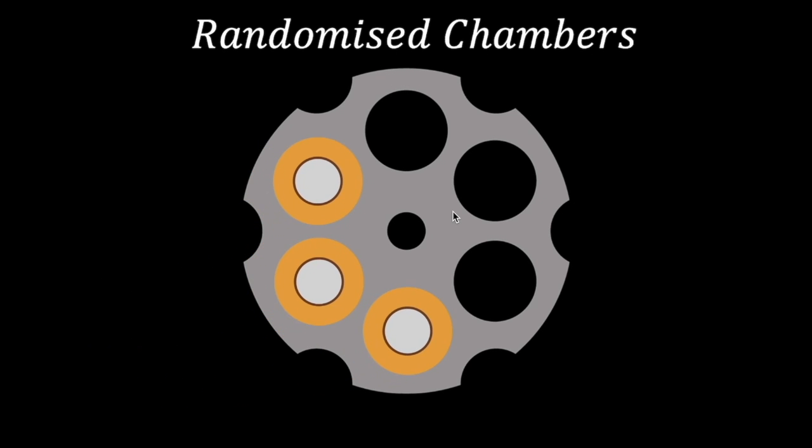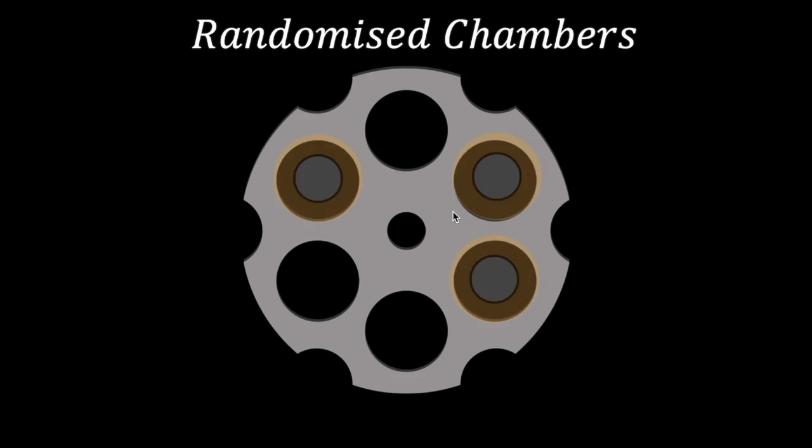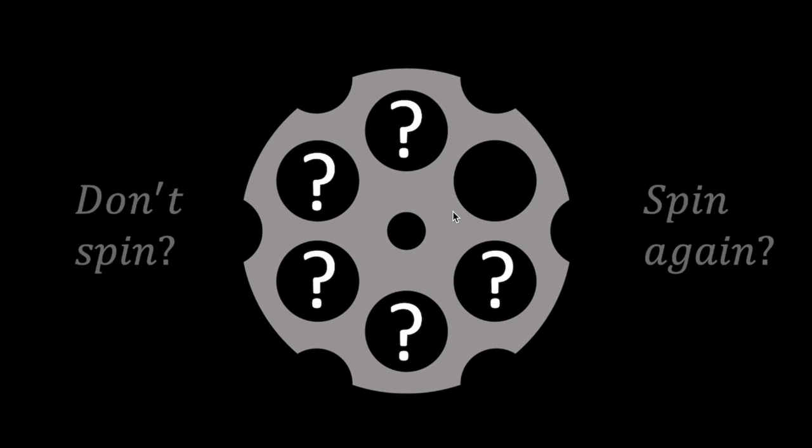The interviewer is determined to kill the next candidate. He now has three bullets in randomized chambers. He spins, fires an empty chamber, and presents the same options to the candidate: to spin or not to spin.